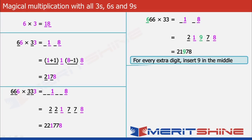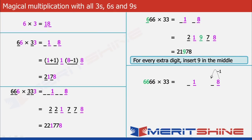Now let us take 6666 × 33 as an example. Again, we will proceed by thinking of it as 66 × 33. So we will first put down 18 and insert 1 blank each to the left of 8 and 1. Now we will decrease 8 by 1 and fill the blank to its left with 7. Similarly, we will increase 1 by 1 and fill the blank to its left with 2.